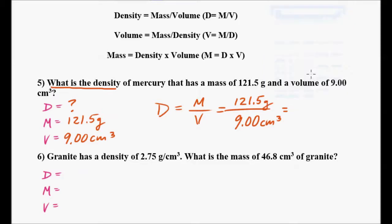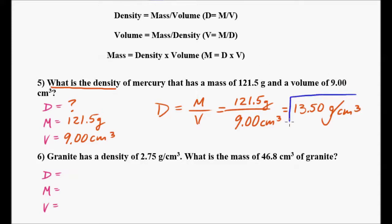121.5 divided by 9 equals 13.50. I'm going to keep it to the hundredths place: 13.50 grams per cubic centimeter. If you label everything as you go it'll make more sense — grams divided by cubic centimeters. That's density, and if we go back to the first video we talked about the units you would use for each of these values.